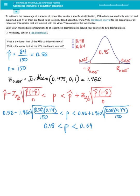It means that we can be 95% confident that the proportion of all rodents in this species that are infected with the virus is between 48% to 64%.